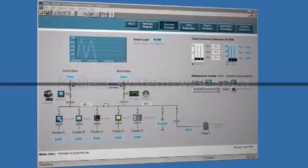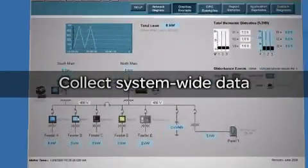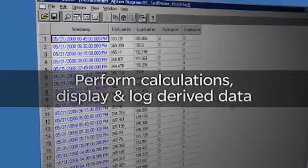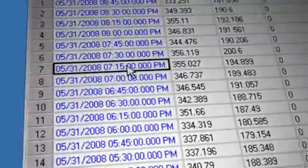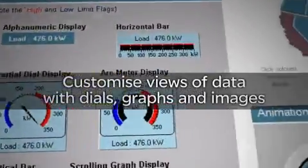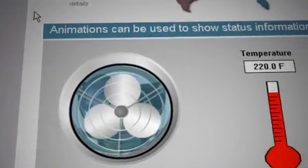With Ion Enterprise, you can collect system-wide data, perform calculations, and display and log derived data in a number of formats. Ion Enterprise allows you to easily customize views of data. Choose from digital figures, dials, bar and trend graphs, or one-line diagrams.